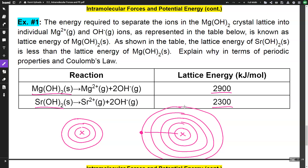With magnesium, the valence electrons are much closer to the nucleus, so there's a much tighter pull on them.